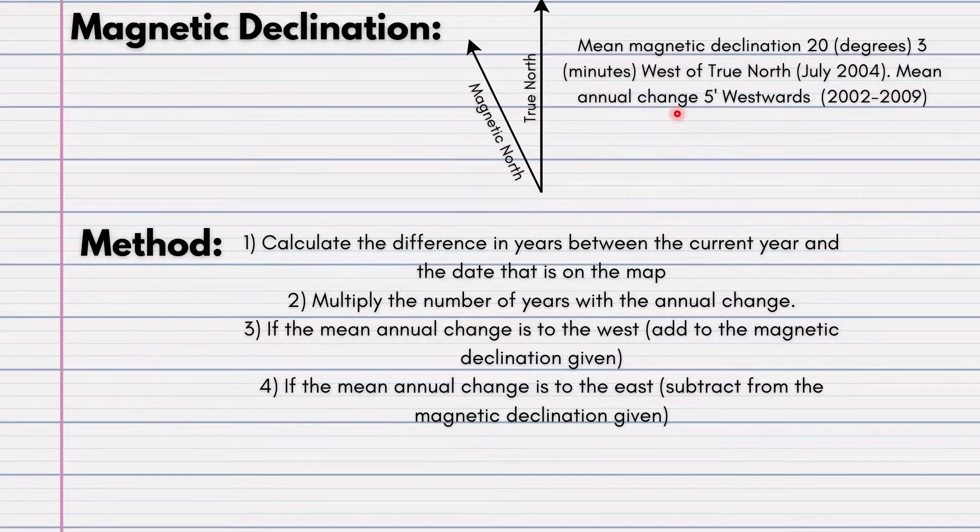The difference in years multiplied by the annual change. The mean annual change in this example will be 5 minutes westwards. Remember, this small inverted comma here will represent your minutes. Step 3. If the mean annual change is to the west, add to the magnetic declination given.